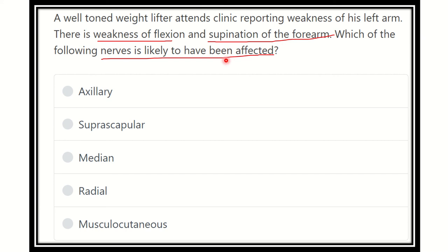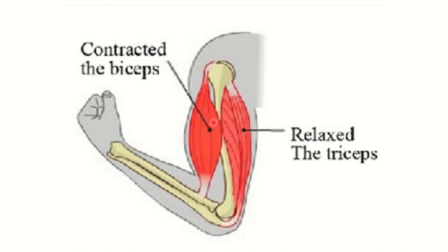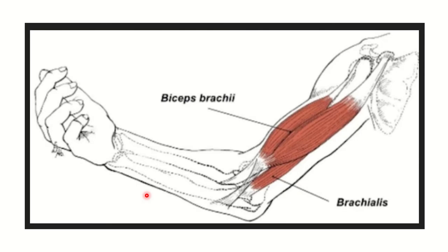We need to find which nerve supplies the muscles responsible for flexion of the forearm and supination. Here we can see the forearm bones — the radius, ulna, and humerus. When they come closer together, that is flexion. So we need to find the muscle responsible for this forearm flexion.